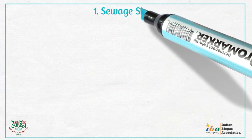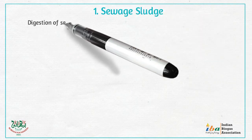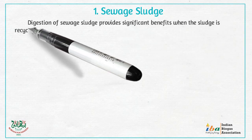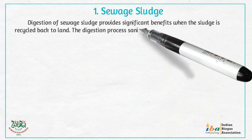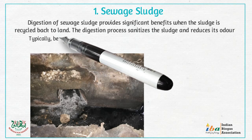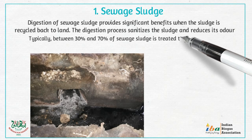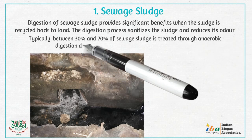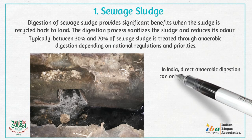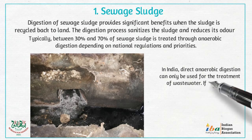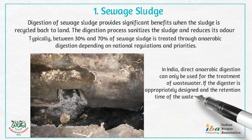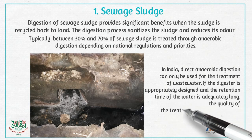1. Sewage sludge. Digestion of sewage sludge provides significant benefits when the sludge is recycled back to land. The digestion process sanitizes the sludge and reduces its odor. Typically, between 30% and 70% of sewage sludge is treated through anaerobic digestion, depending on national regulations and priorities. In India, direct anaerobic digestion can only be used for the treatment of wastewater. If the digester is appropriately designed and the retention time of the water is adequately long, the quality of the treated water can be excellent.